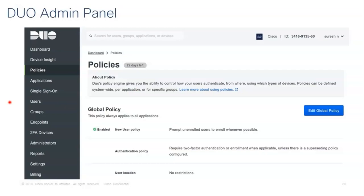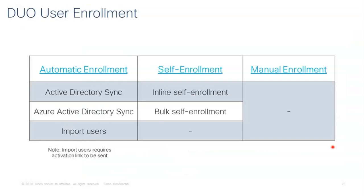The second component is user enrollment. Users and their phones, tablets, or hard tokens must be enrolled into Duo before they start using the system. Duo provides several enrollment methods: self-enrollment allows users to add themselves to Duo and walks them through setting up devices for two-factor authentication. For larger organizations, they may prefer bulk enrollment options like synchronizing users from their existing identity stores such as Microsoft Active Directory. An administrator can also create individual Duo user accounts at any time — which is manual enrollment.